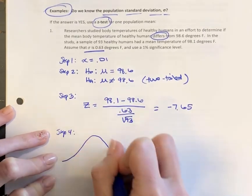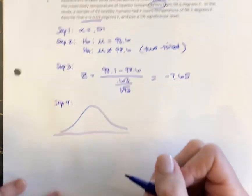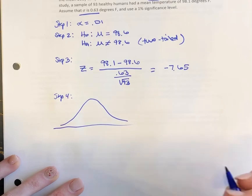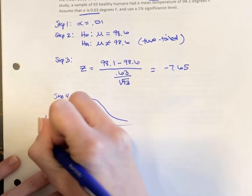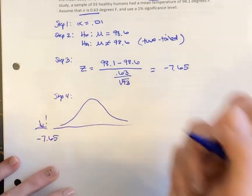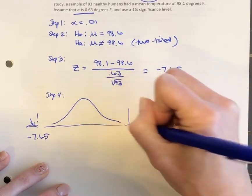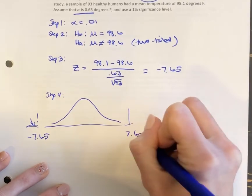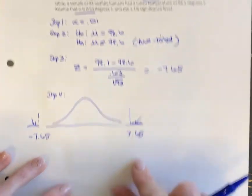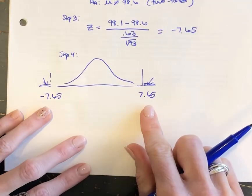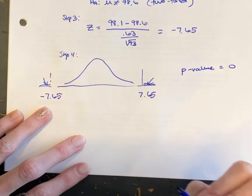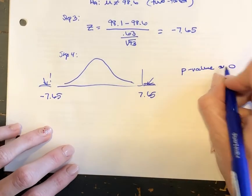Step four: we have our standard normal distribution, and our test statistic lands way down at negative 7.65. We want the area below negative 7.65 as well as the area above positive 7.65, because this is a two-tailed test and we need the sum of those two areas. That sum is essentially zero — we'll use approximately zero.